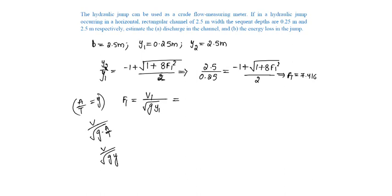That is equal to q by y1 under root of g y1, since capital Q is equal to area into velocity. Area is b into y into v. q by b is small q, which is equal to v into y, from which v will be equal to small q by y.